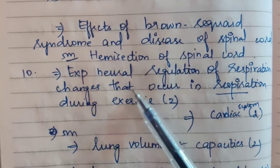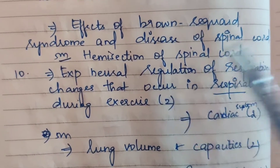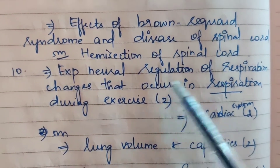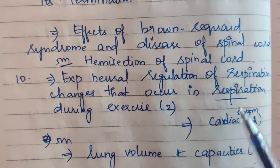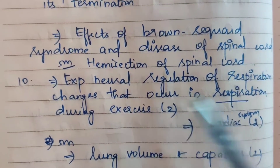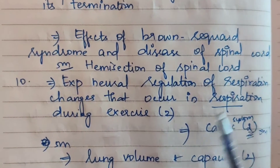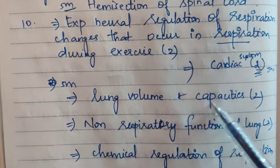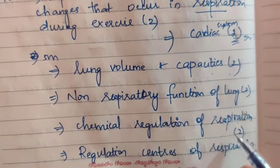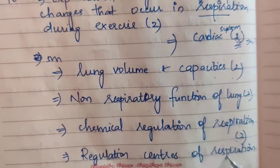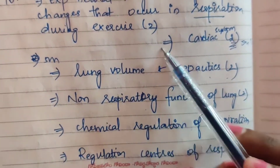Tenth question: Explain neural regulation of respiration and changes that occur in respiration during exercise — asked as a combined question. Also: changes in respiration and the cardiac system during exercise. This is a 15-mark question asked two times. Five-mark subtopics include: lung volumes and capacities — two times; non-respiratory functions of lung — two times; chemical regulation of respiration — two times; respiratory centers.